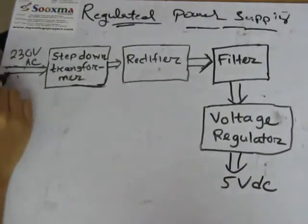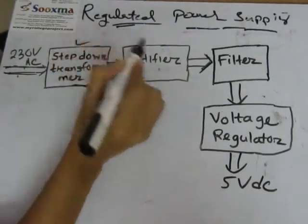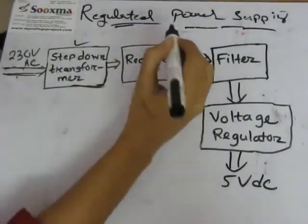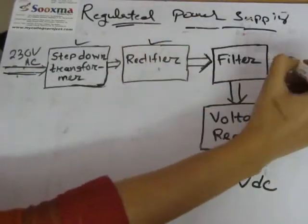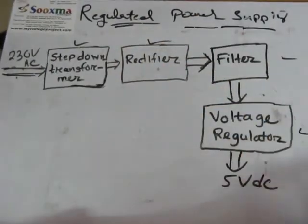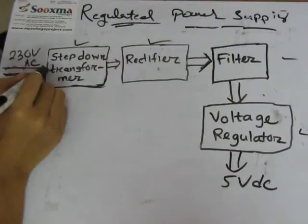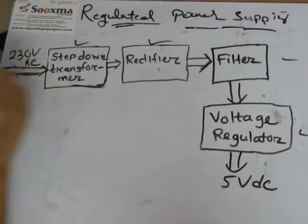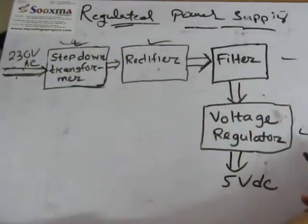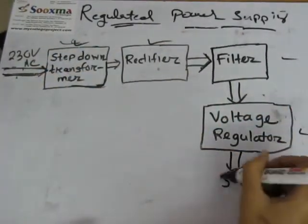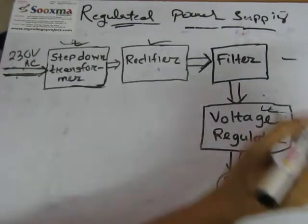This regulated power supply system consists of, first, a step-down transformer, after that a rectifier, then a filter, and finally a voltage regulator. We will give a power supply of 230 volts AC to the step-down transformer and finally get 5 volts of DC supply from the voltage regulator.